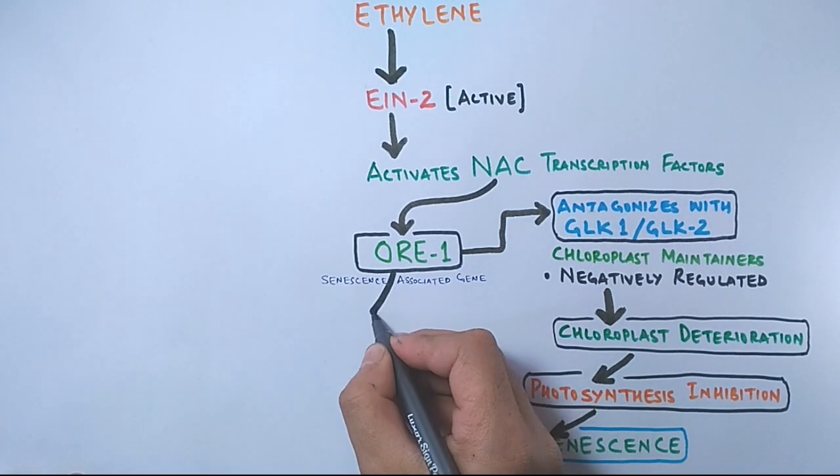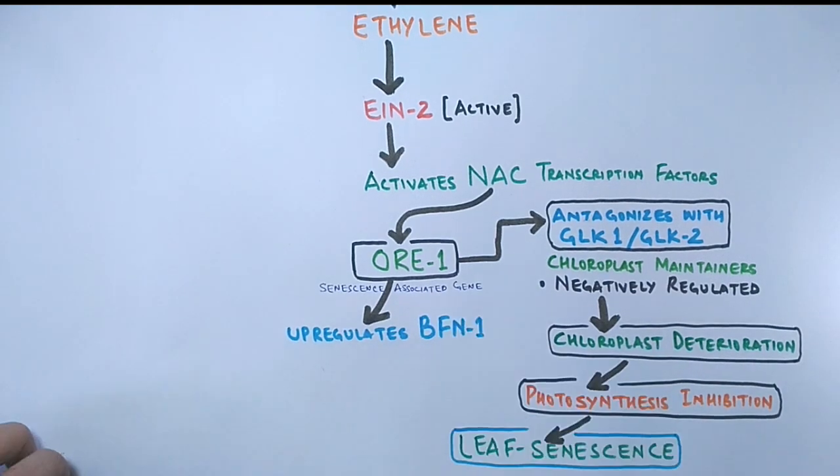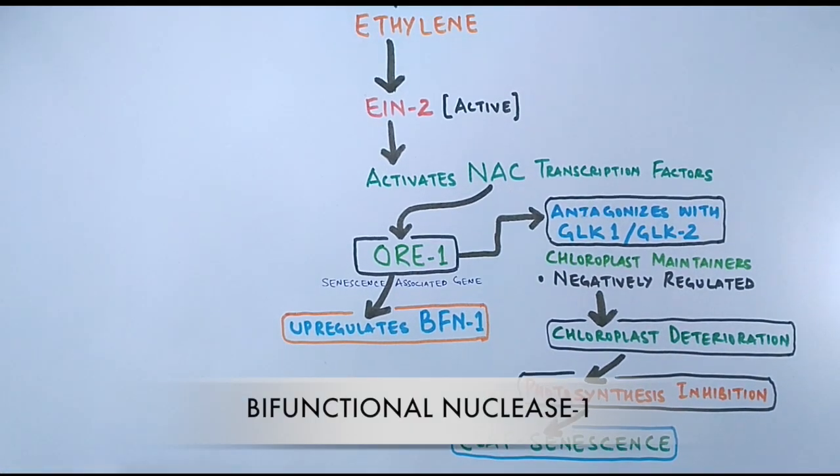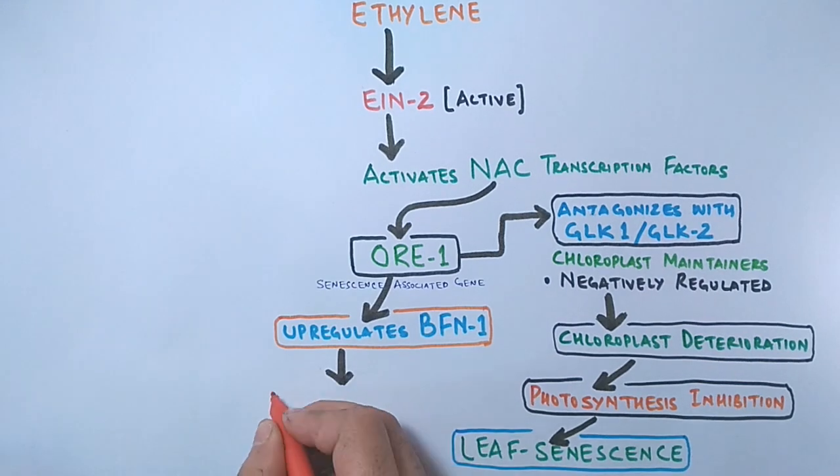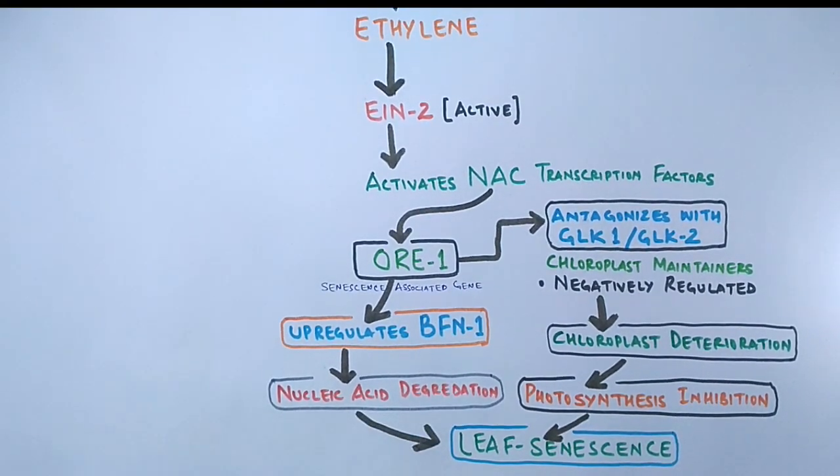Then we have another activity of ORE1 gene. It also upregulates the expression of BFN1 gene, that's bifunctional nuclease gene, which causes nucleic acid degradation in leaf that ultimately leads to leaf senescence also.